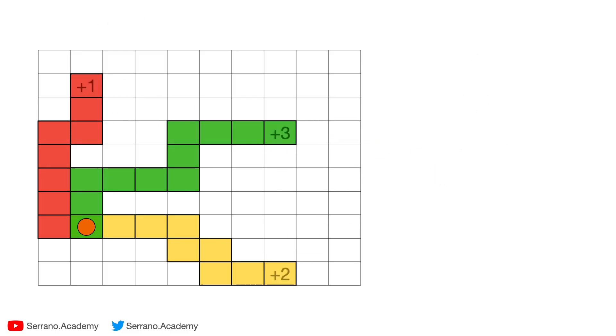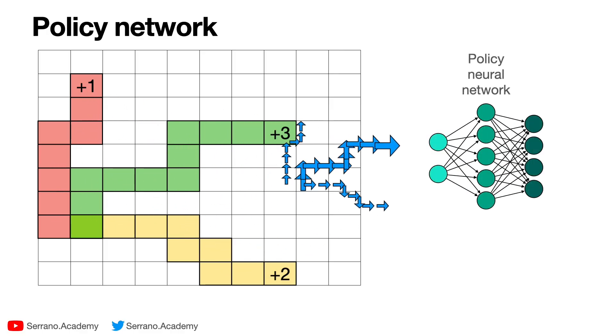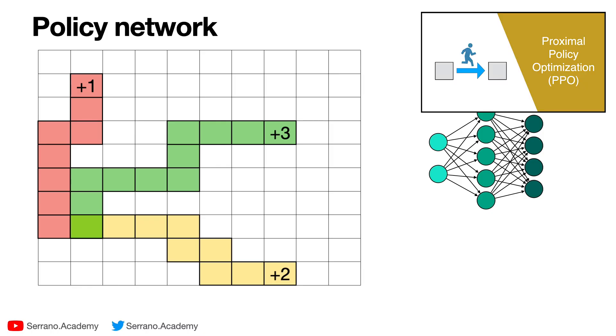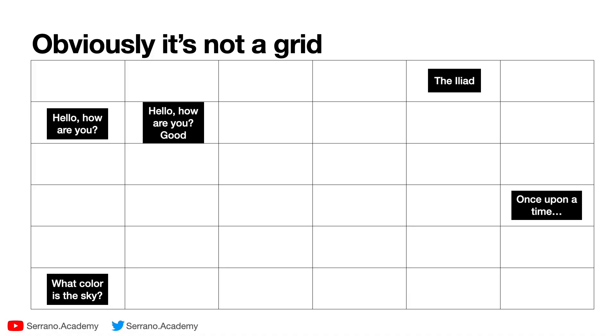And for the policy network, well, the same thing happens. We want the agent to move around to get the maximum number of points. So we tell the policy neural network to make these probabilities pretty high, this one's so-so, and this one's pretty low. That means we feed all this information into the policy neural network. Again, if you want details about how to train them, check out the PPO video. Now I made a huge assumption here, which is that we have a grid with sentences and moving around the grid means adding words to the sentences. Obviously, the space of text is not a grid.